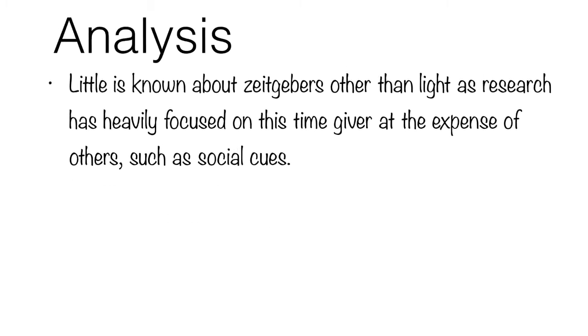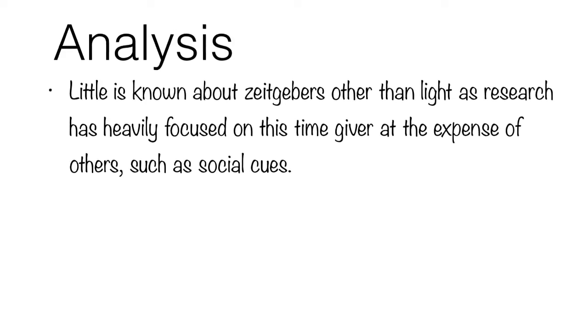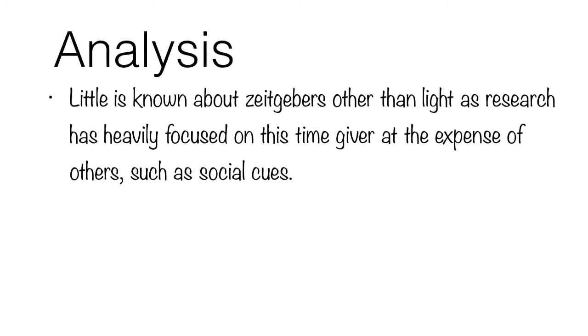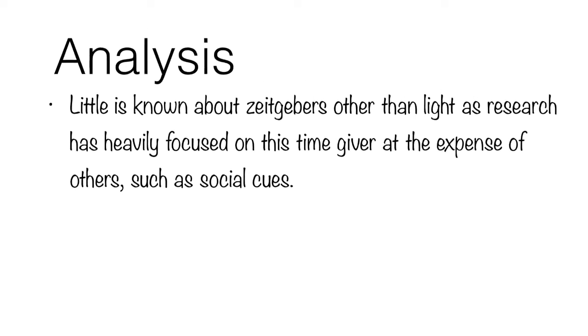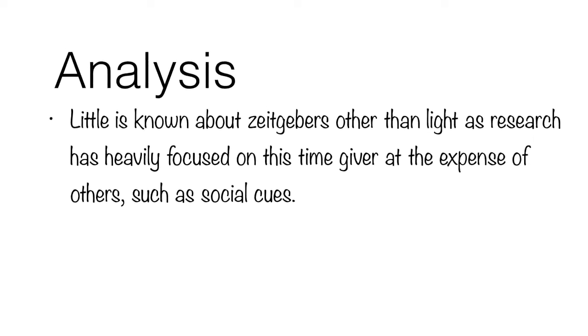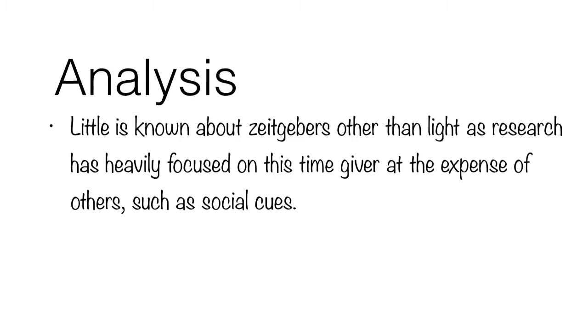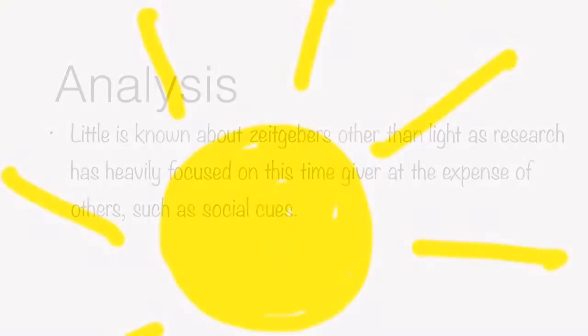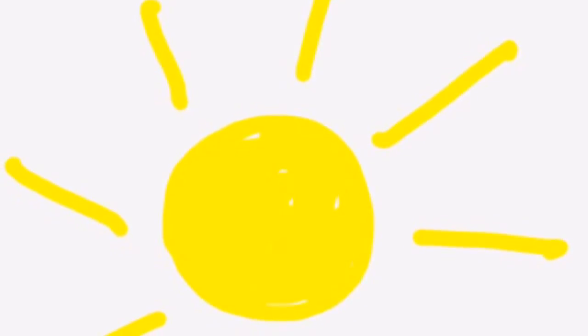Unfortunately, we have fairly limited knowledge of the role of zeitgebers in the control of circadian cycles other than light. Most research is focused on locating pacemakers and identifying the oscillating cells that might create the cycle. Research into zeitgebers focuses mainly on the role of light. This might be because light has an obvious effect, whereas for some time cues such as social cues, it's not clear how they act as time givers, which makes it difficult to design a study to test the role.